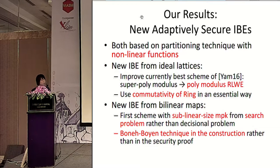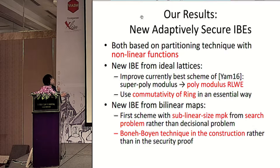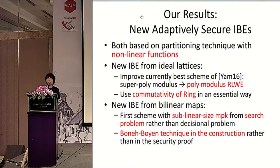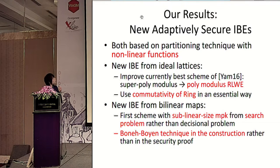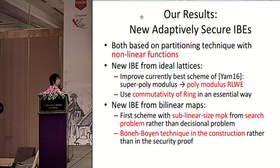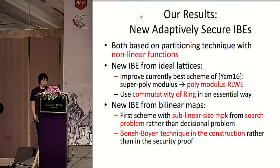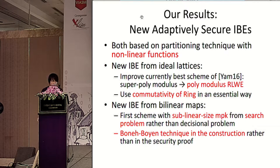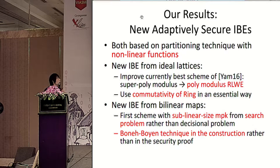Our results are mainly two, but at a high level, we use the same technique. We base our security on the partitioning technique, where we use a nonlinear function to partition the identity space. For the IBE scheme from ideal lattices, we improve upon the currently best-known scheme of Yamada '16 from Eurocrypt, where they needed a super-polynomial modulus ring LWE assumption — ours only requires a polynomial modulus ring LWE assumption. We use the commutativity of the ring in a very essential way and don't know how to instantiate our scheme in a normal lattice. For the IBE scheme from bilinear maps, we create the first scheme with sub-linear size master public key from search problems rather than decisional problems, using the Boneh-Boyen technique during construction rather than in the security proof.